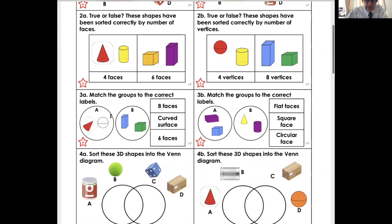Match the groups to the correct labels. Eight faces. That's got what? Two faces. It's got zero faces. It's got, sorry, curved surface. Or six faces. This is, that's eight. That's eight. Those two are eight. That one. That one's eight. And this one has got, well, it hasn't got six faces.